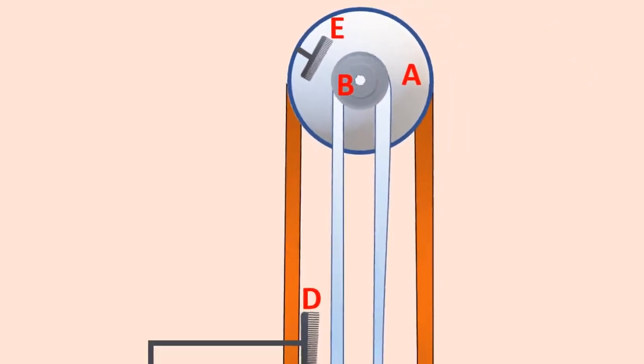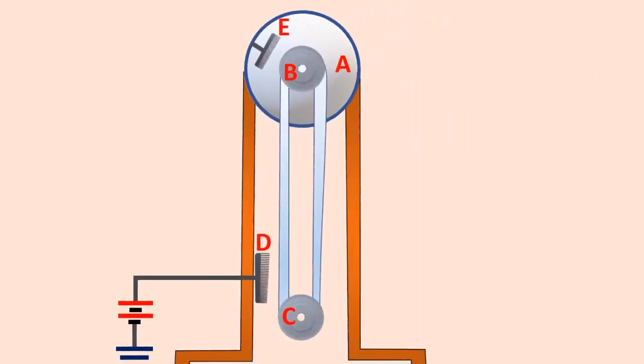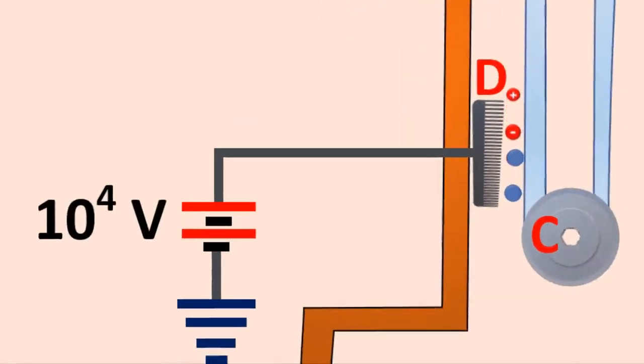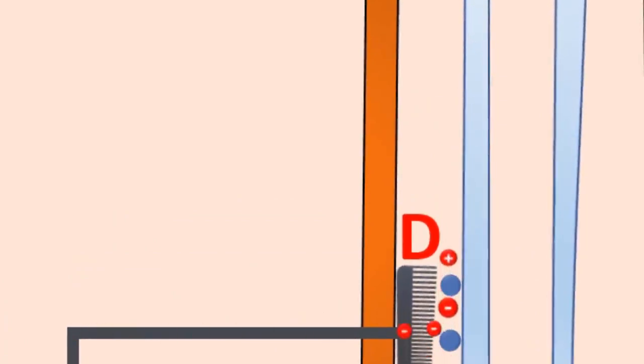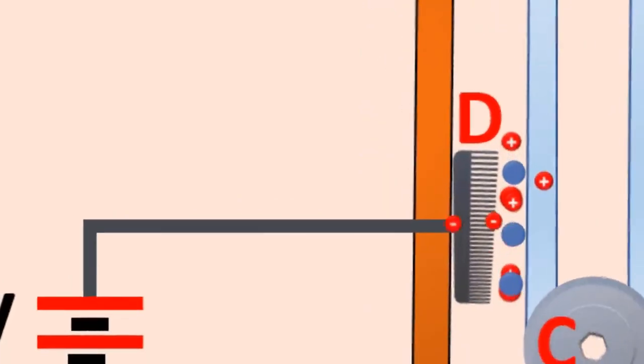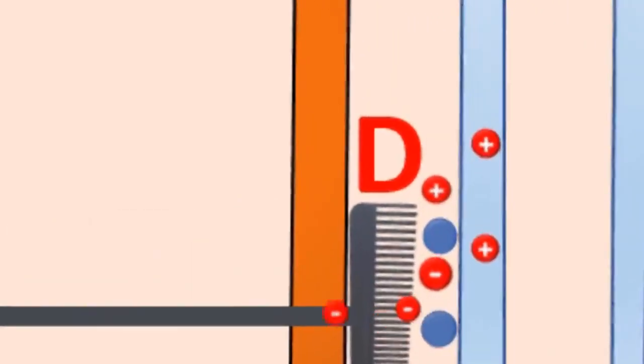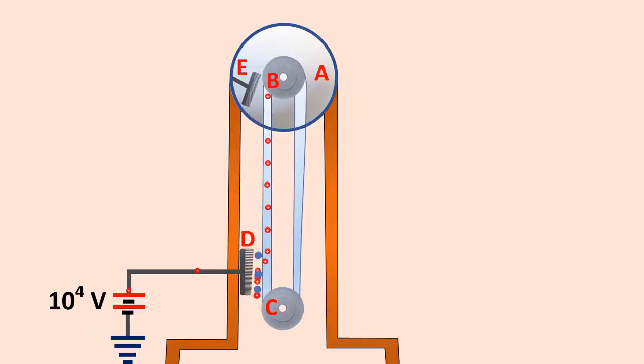Working of a Vandegraaff generator. There is high electric field near the comb D, so air between the belt and comb D gets ionized due to the action of points. The positive charges are pushed towards the belt and the negative charges are attracted towards the comb D. The positive charges are stuck to the belt and they move up.